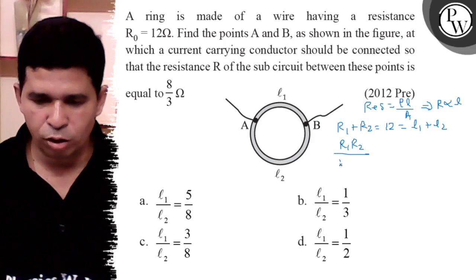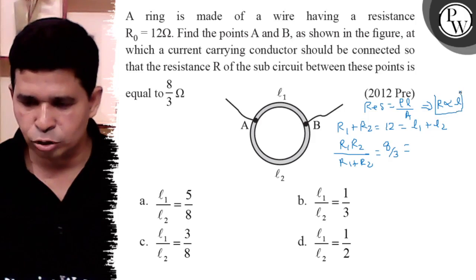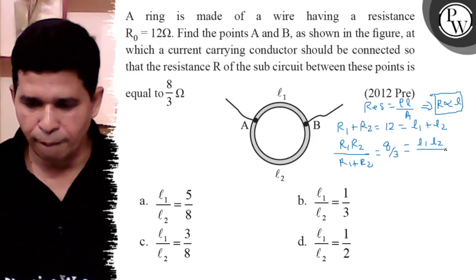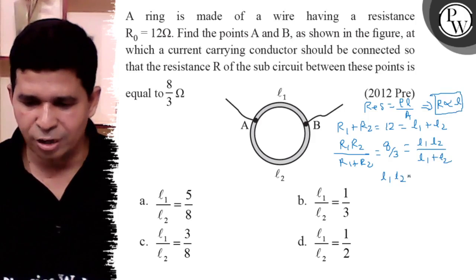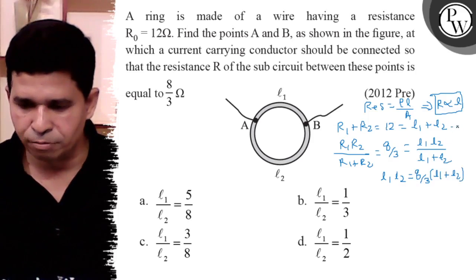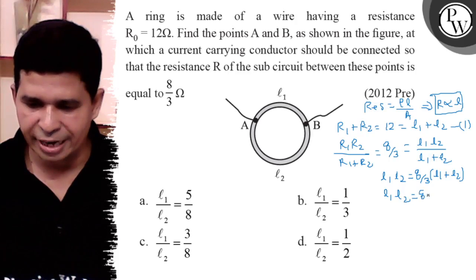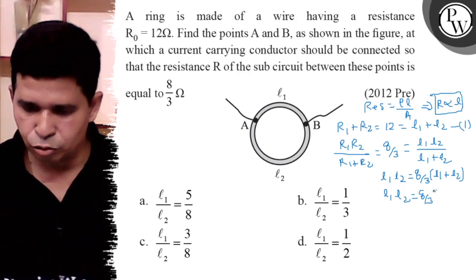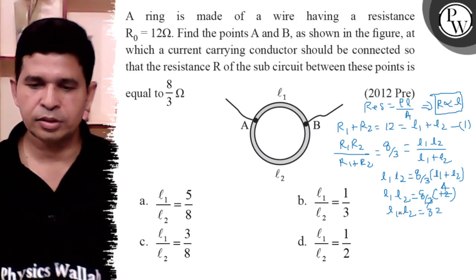Since parts AB are connected in parallel, R1 R2 upon R1 plus R2 is given as 8 by 3. And since R is proportional to L, L1 L2 upon L1 plus L2 is 8 by 3. So the product L1 times L2 equals 8 by 3 into 12, which gives L1 L2 equal to 32.